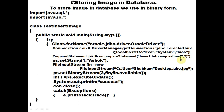We write ps.setString at position one for the first question mark, storing the name 'Asok' in the first field of the employee table. The second question mark is for the second field. To store an image in the database, we use binary form - the image will be stored as binary data.